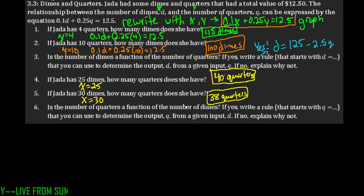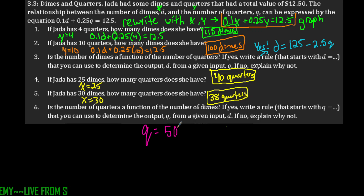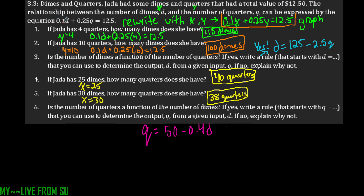Lastly, can we write q as a function? Yes. We write q equals 50 minus 0.4 times d. All we're doing is reorganizing and rewriting the original equation, solving it for q.